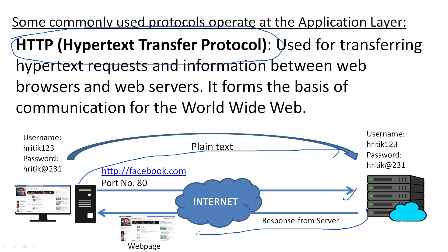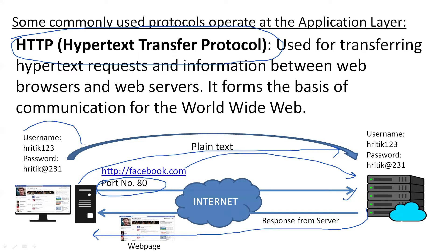In response, the server will forward a reply. The port number of the HTTP protocol is 80. However, the problem with HTTP is that all data is forwarded in plain text, so anyone over the internet can track your data. This is the main issue with the HTTP protocol.